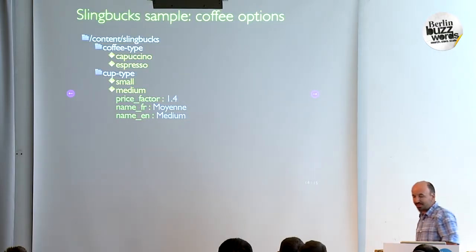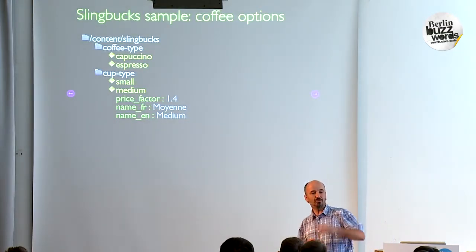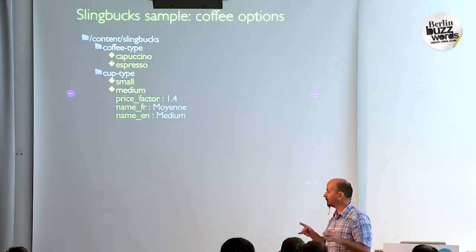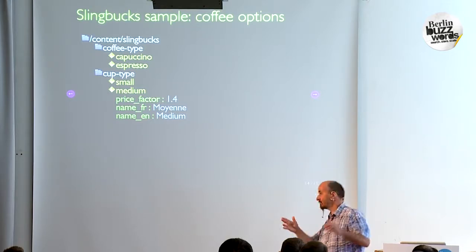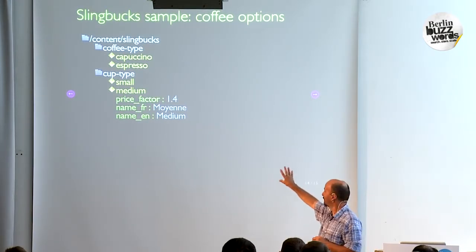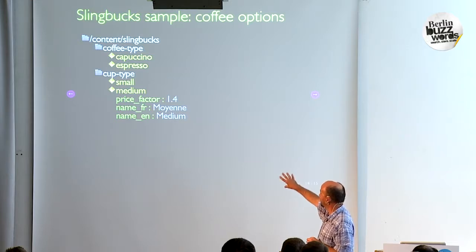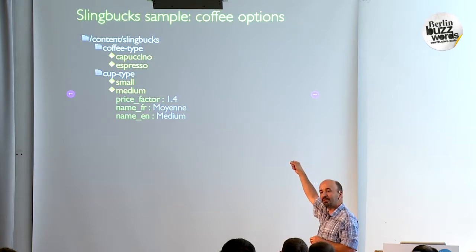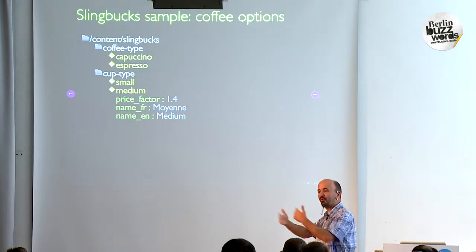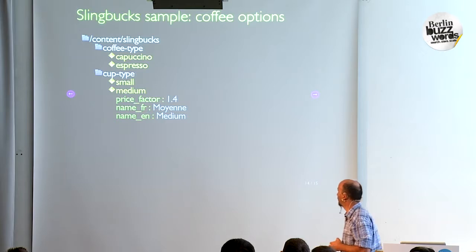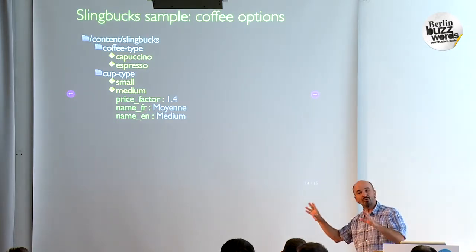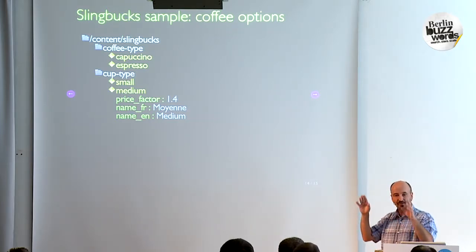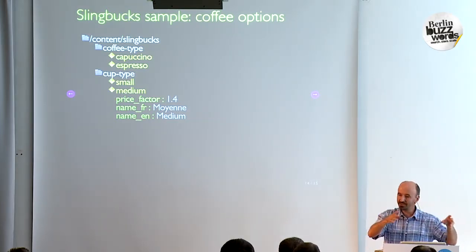Another example from the same sling box sample is the configuration. You need to define what types of coffee you have. Instead of a configuration file, you just do a small tree of nodes. This is a configuration for the options. If you need a new type of coffee, you just add a node under the coffee type folder, and your system will include that in the list of options. Another example where it's configuration data, but by putting it in JCR you again benefit from locking, versioning, observation, and access control.